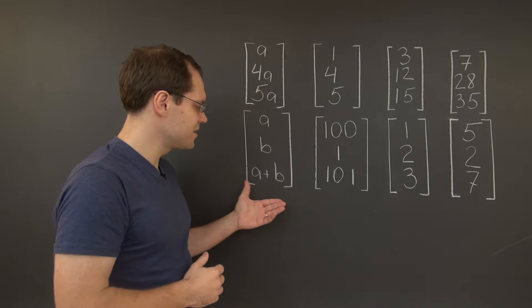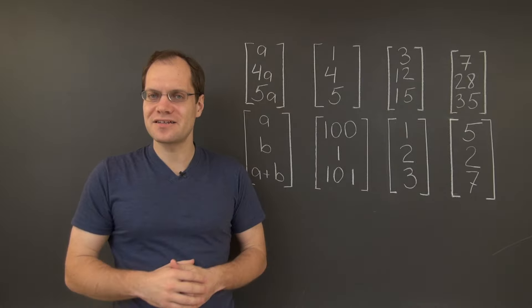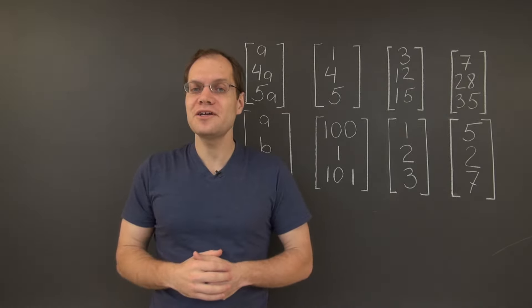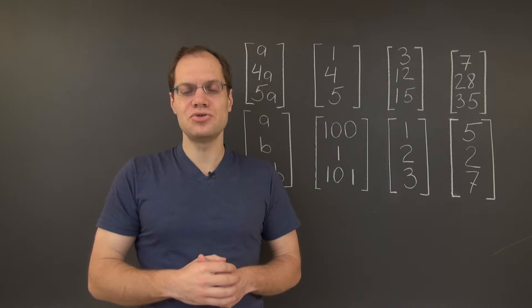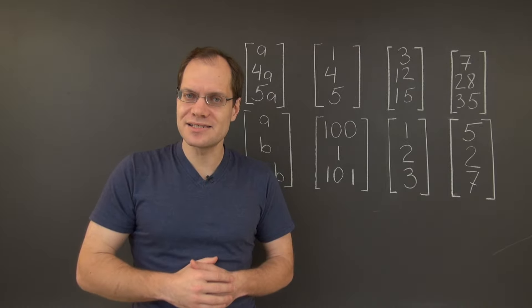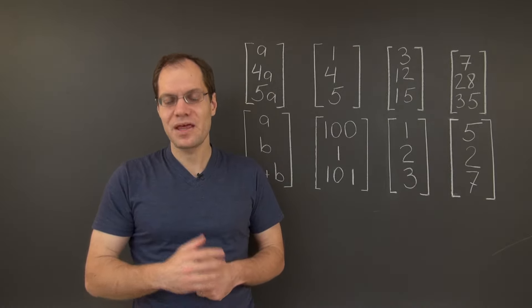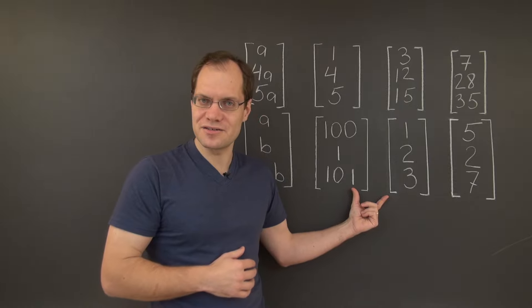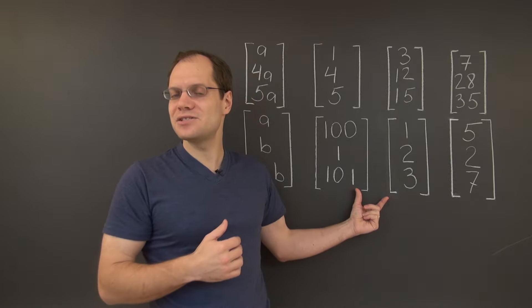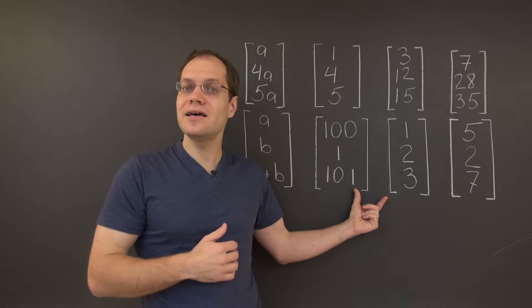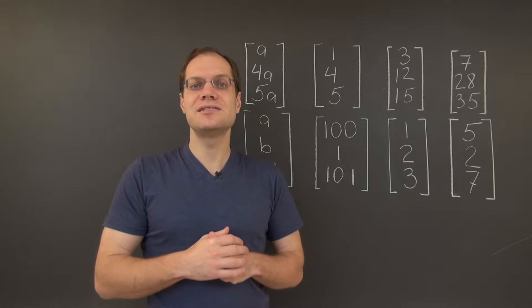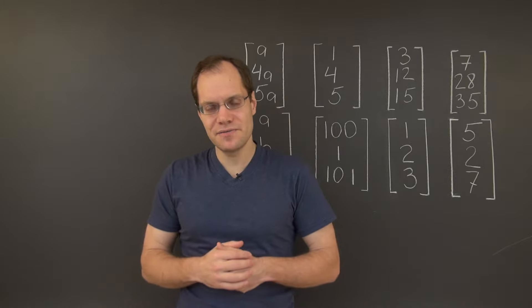So how do we show that this is indeed the span of these vectors? By counting dimensions. We already know that the span of these vectors is at most two-dimensional. Now let's show that it's precisely two-dimensional. We can do this by looking at the first two vectors, which are linearly independent — neither one is a multiple of the other.